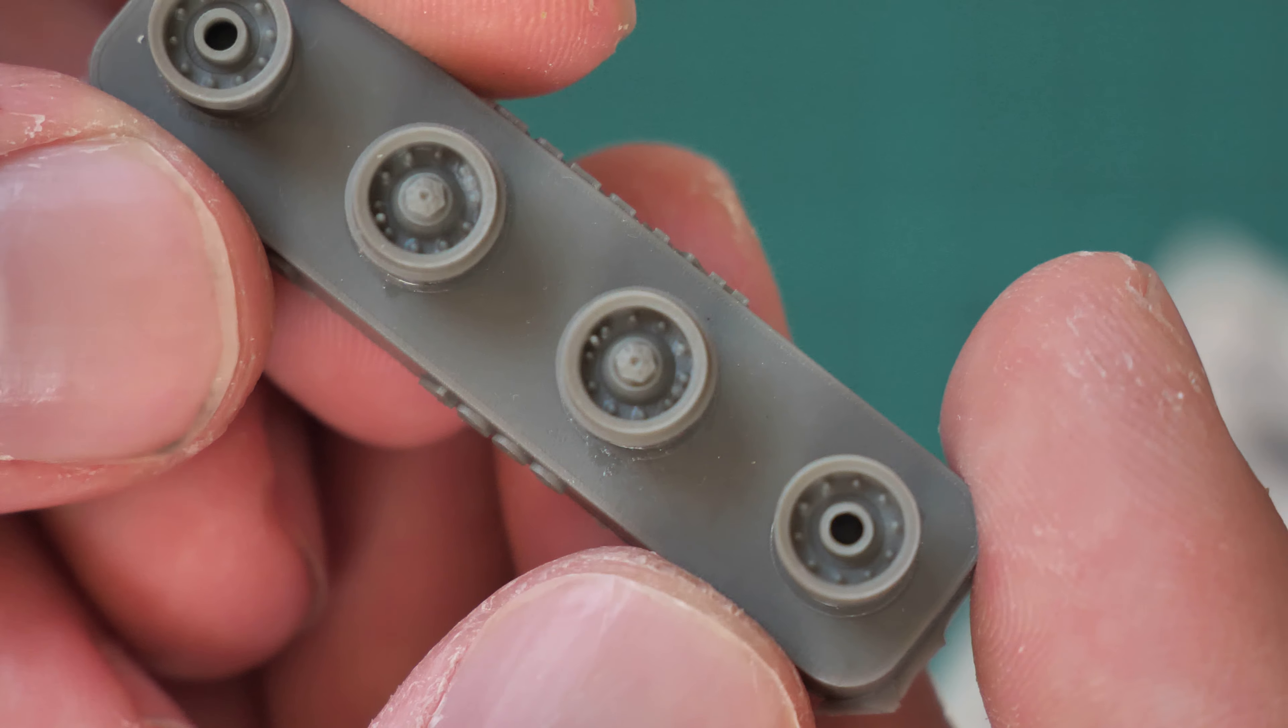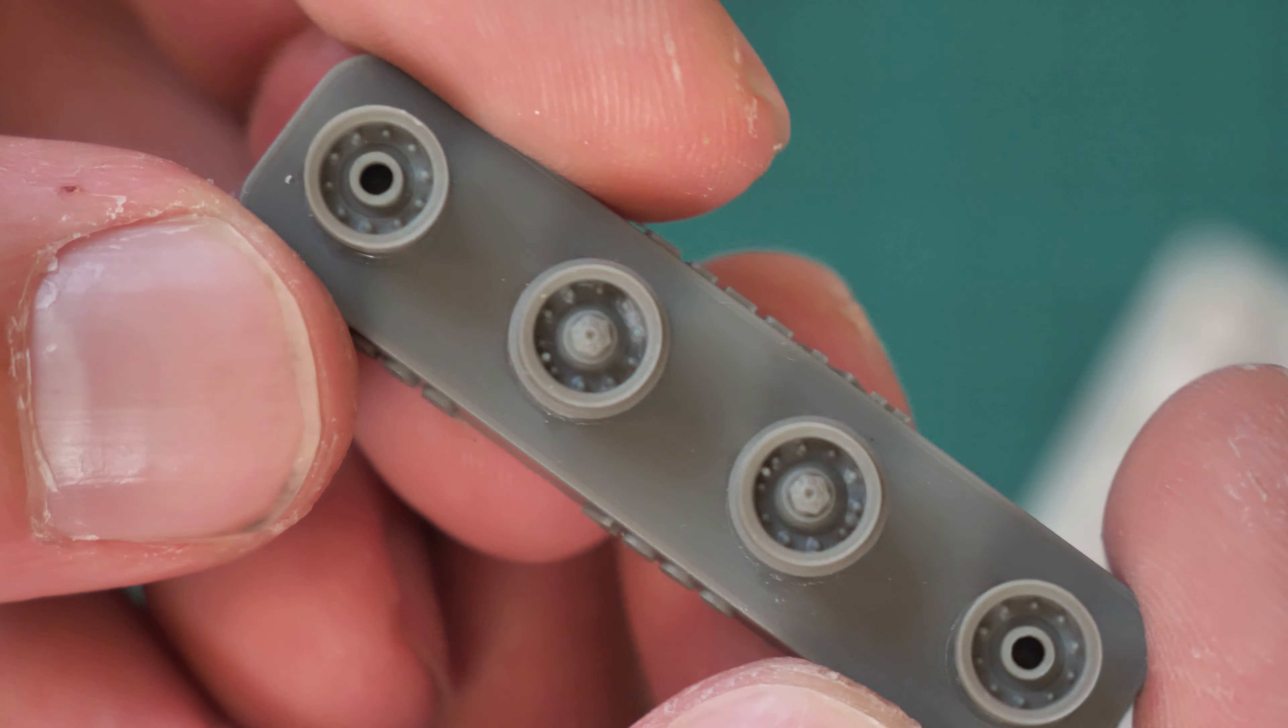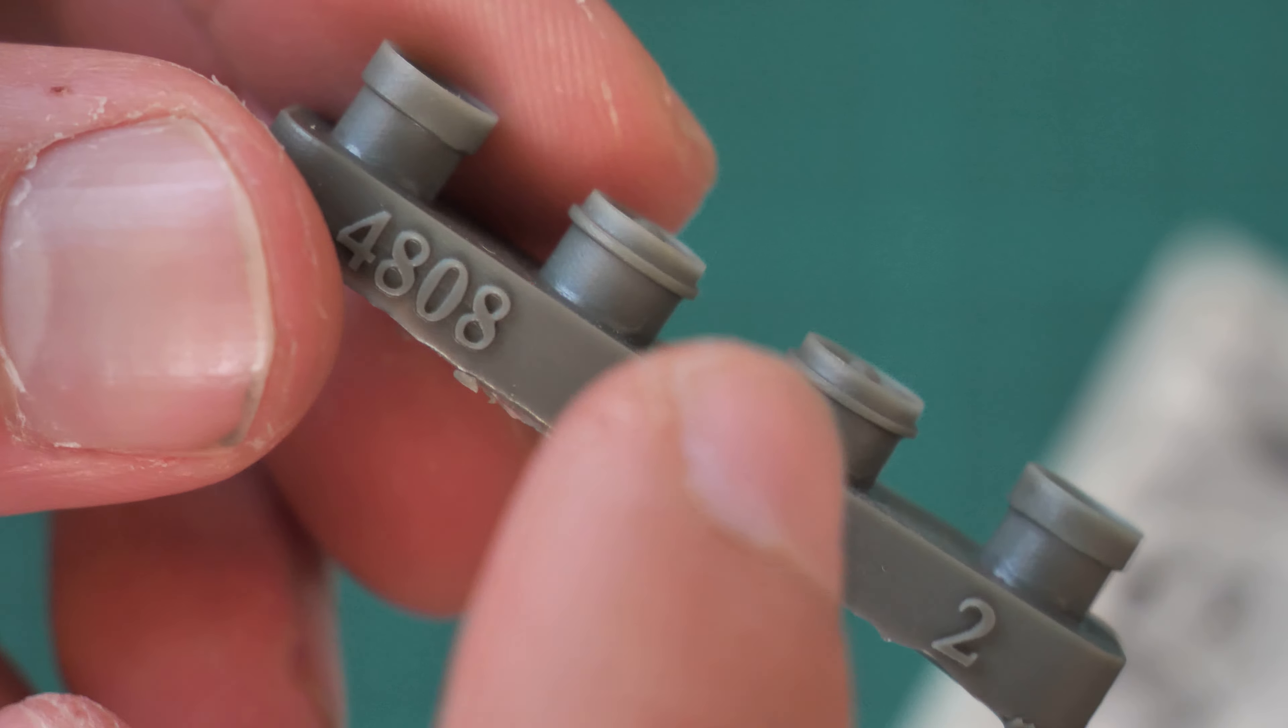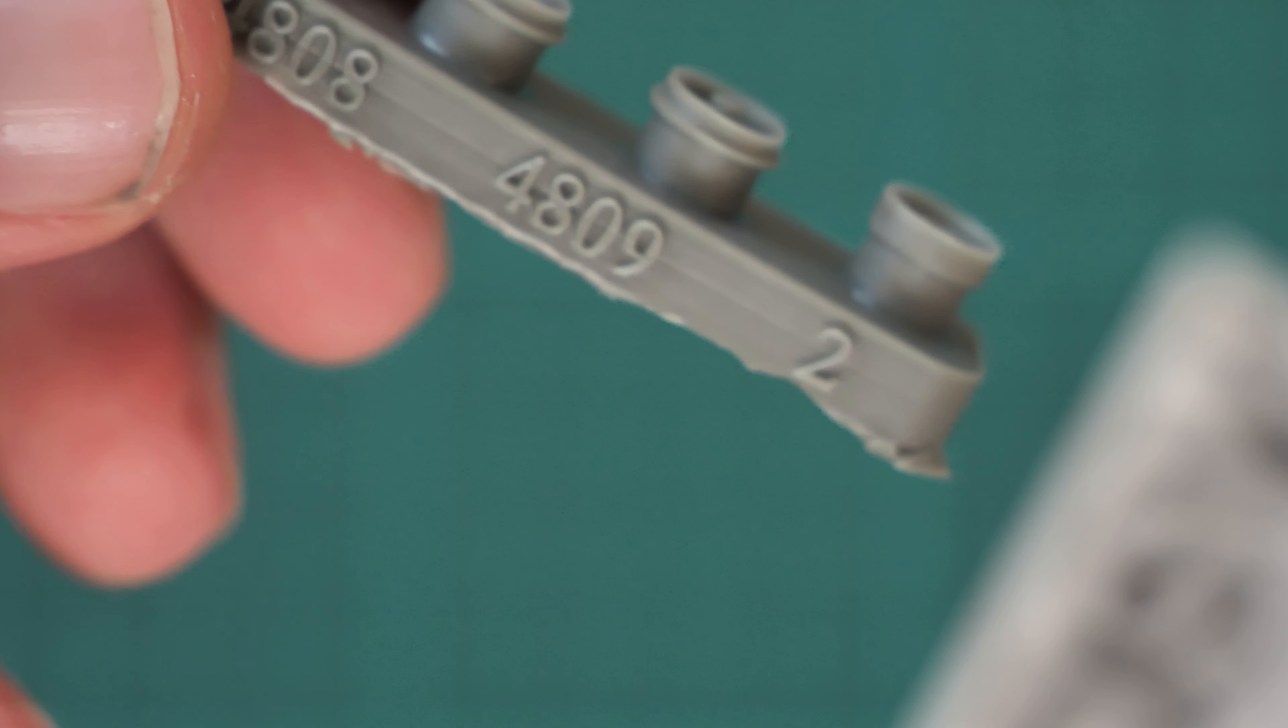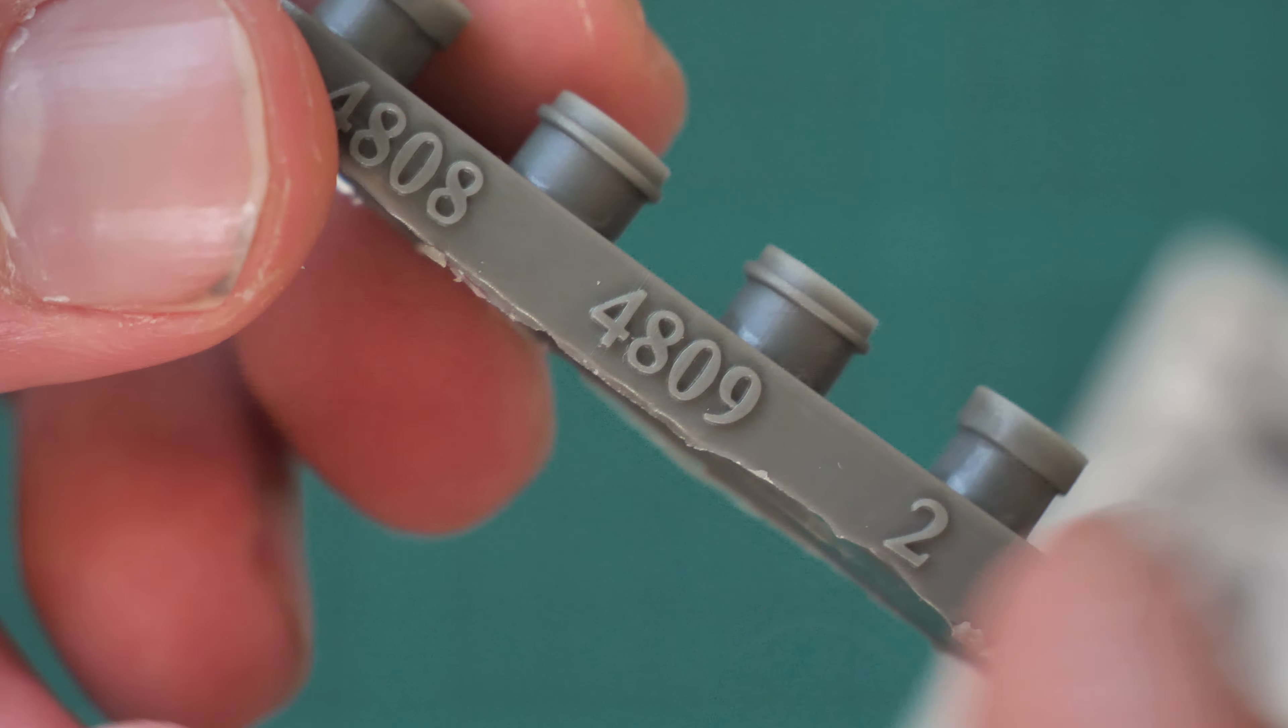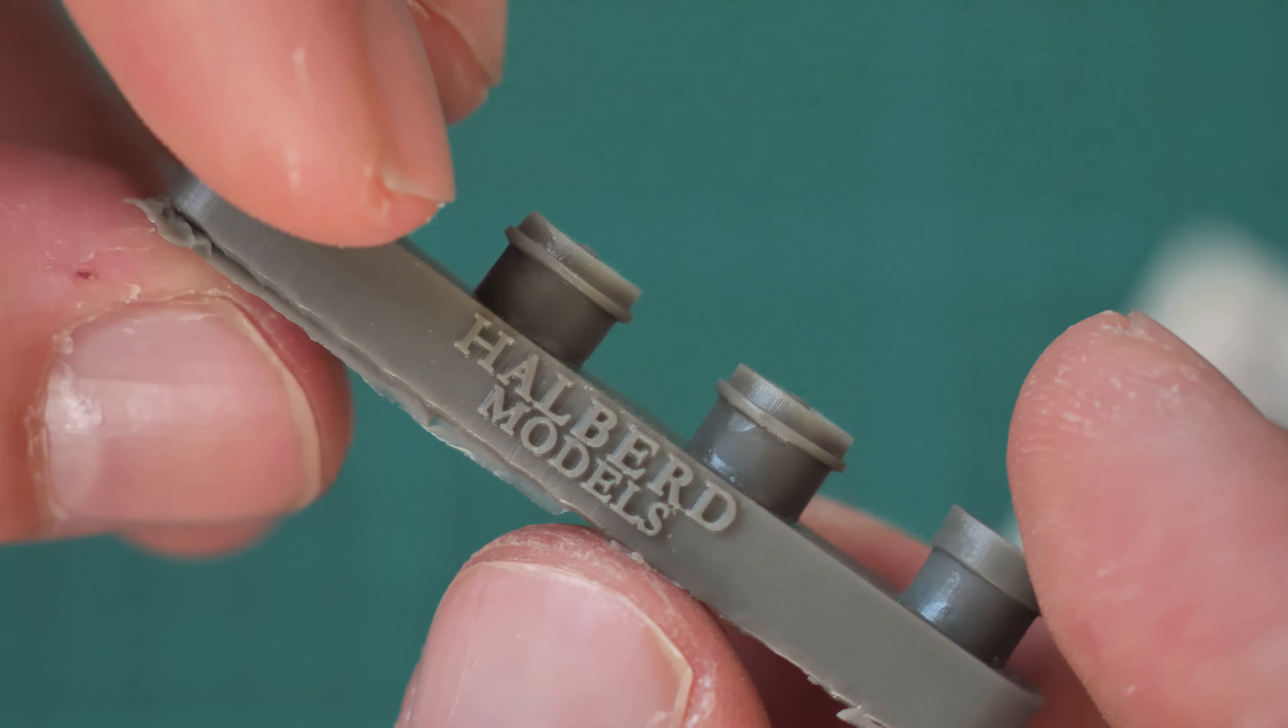So these were the main wheel rims, and here we have the nose wheel rims which also look good with the same style of attachment points. You can see—I guess that was the number of the set, right? No it is not, so I'm not sure what this number means, but here from the other side we have the logo of the manufacturer.